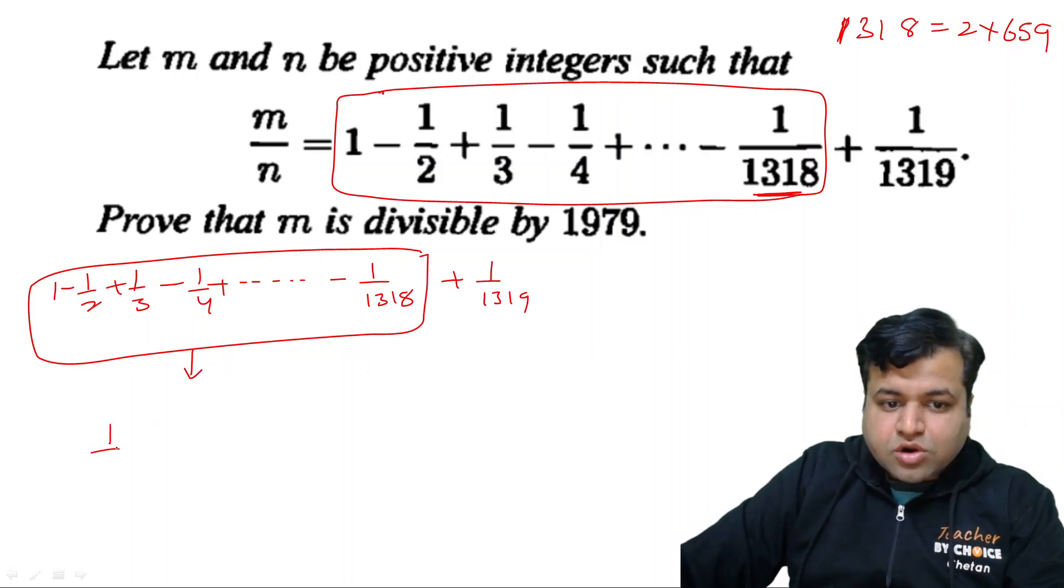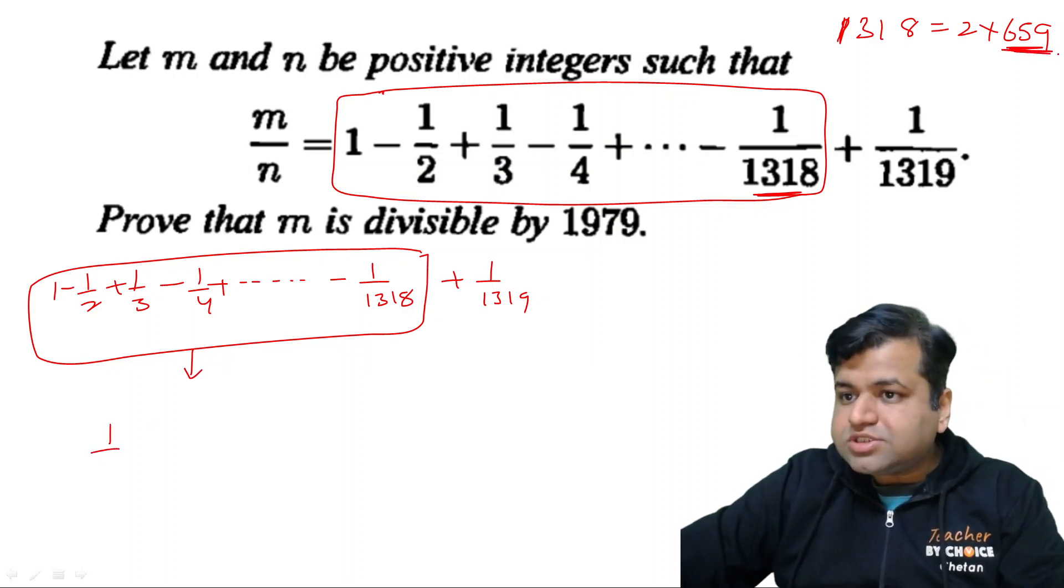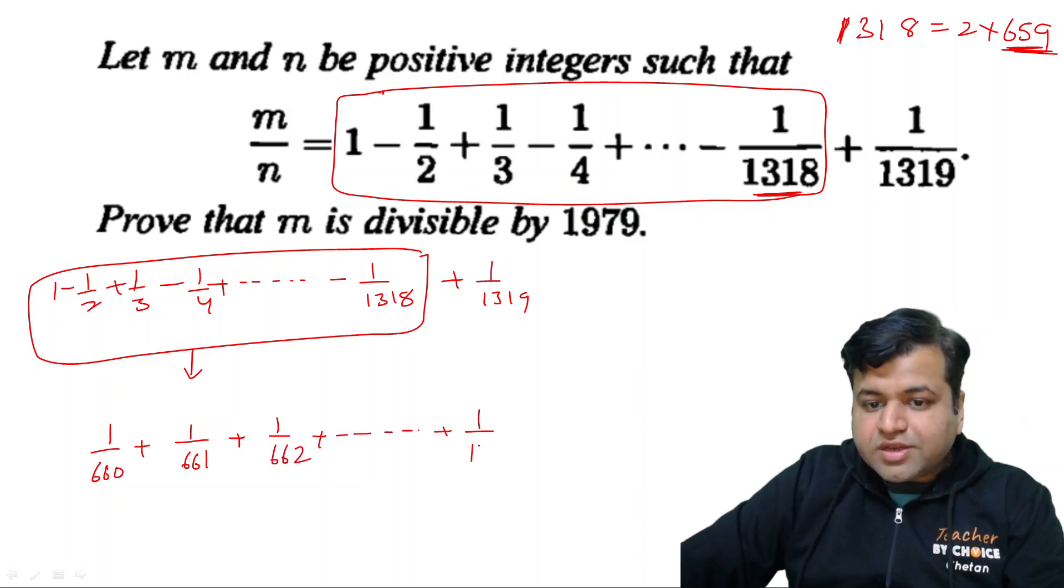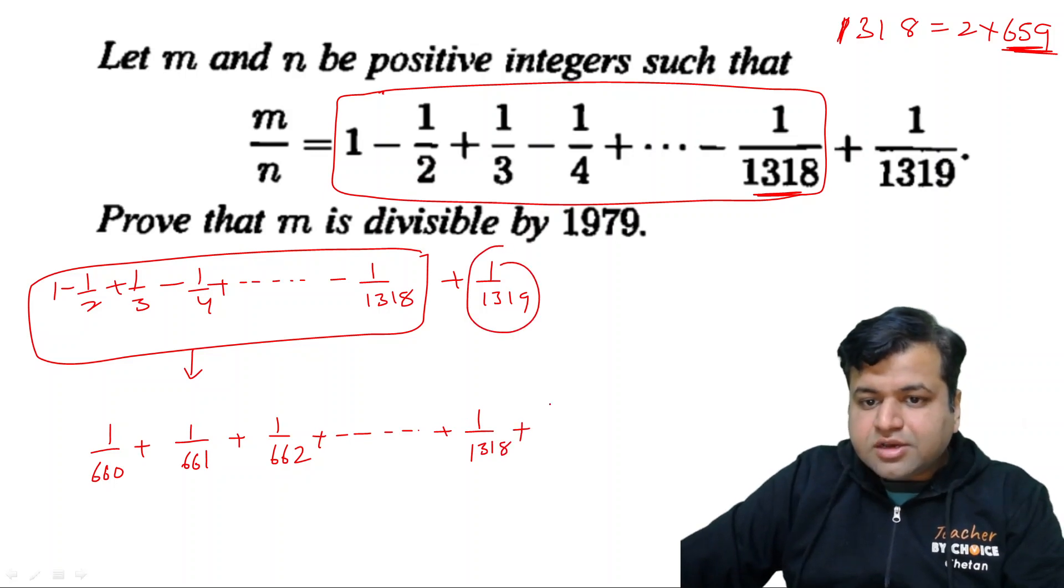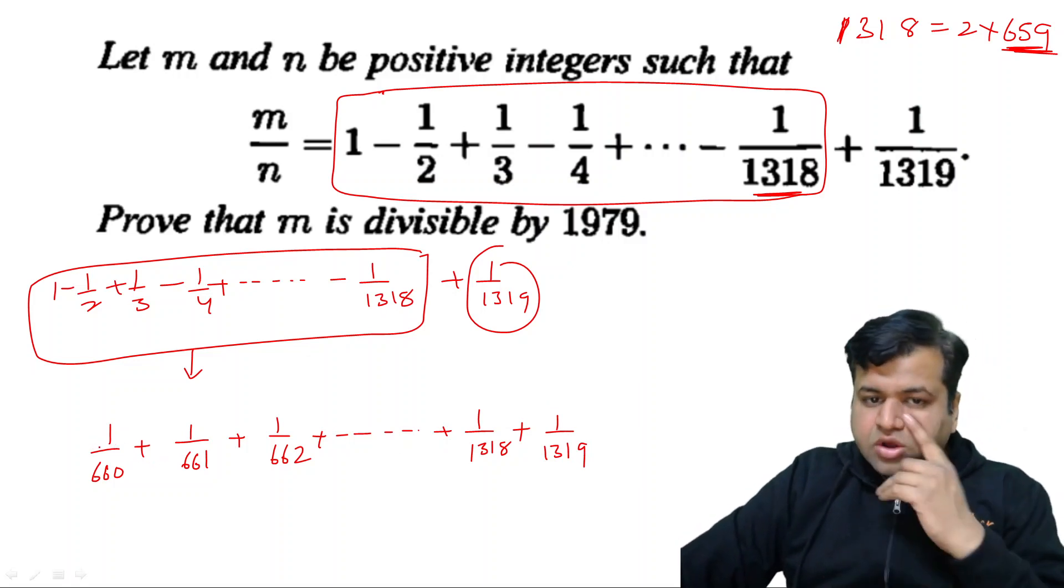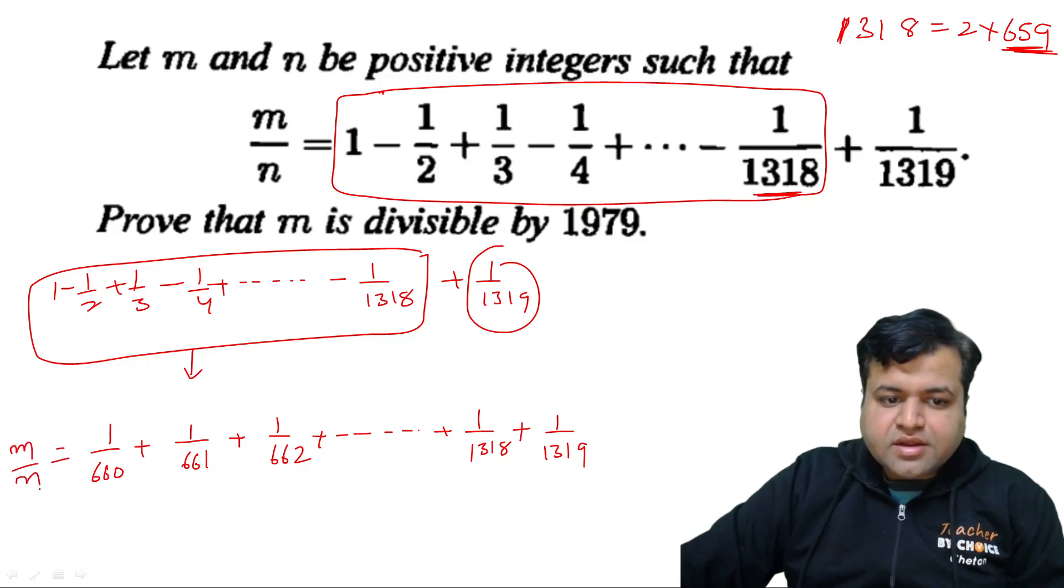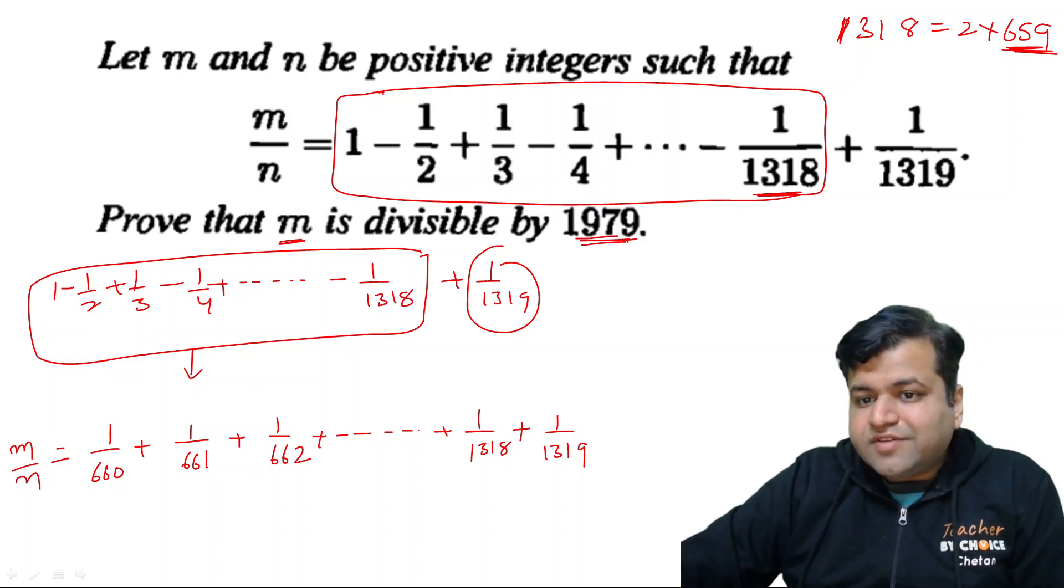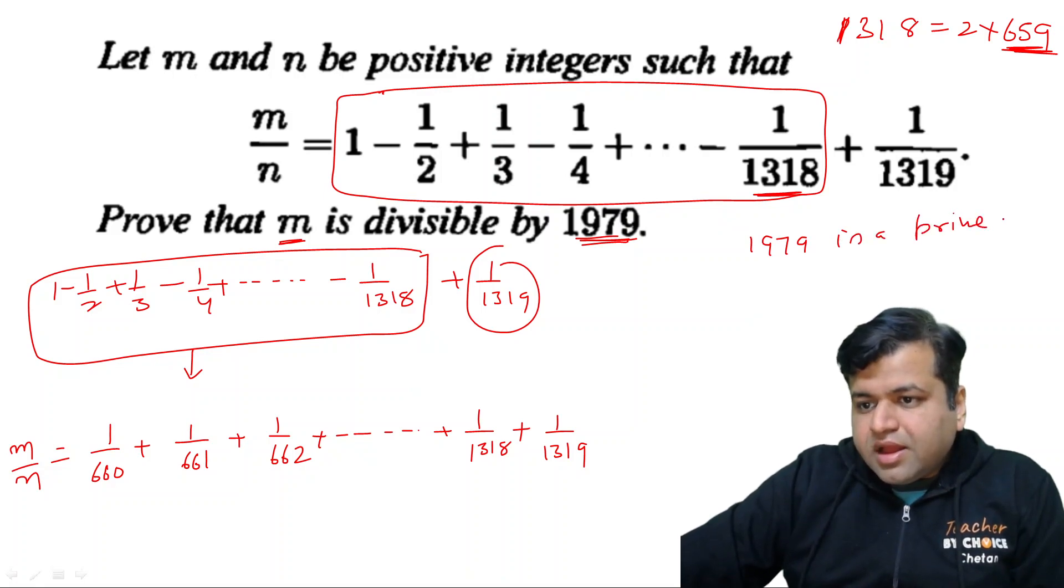So this part, that is 1 minus half plus 1 by 3 minus 1 by 4 and so on till minus 1 upon 1318, plus 1 by 1319. Now this part is nothing but equal to 1 upon n plus 1 and n is your 659. So it will start from 1 upon 660 plus 1 upon 661 plus 1 upon 662 plus and so on till 1 upon 1318 plus we have an additional term 1 upon 1319. So I hope this should be clear to each and everyone. So this is nothing but this is our m by n. Now what we actually need to prove? We have to prove that m is divisible by 1979 and 1979 is a prime number.